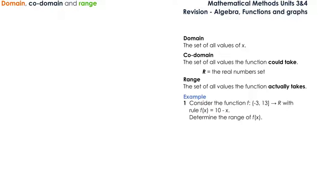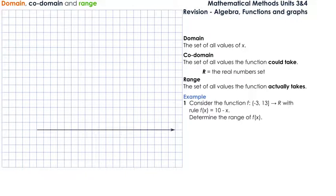Consider the function f defined on the domain negative 3 to 13 and codomain ℝ, with rule f(x) equals 10 minus x, and we have to determine the range of this function. I'm going to represent this on a graph because graphs are a lot easier to look at and discuss.